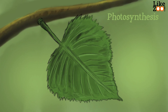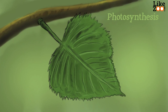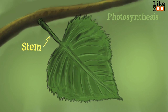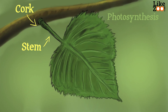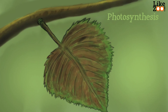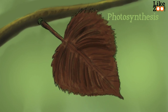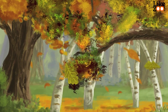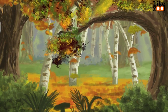When autumn begins, the sun shines less fierce and long. The tree trunks suck up all the nutrients that are stored in the leaves. Each leaf has a stem — a cork on the end of the stem functions as a stop. The leaf stops getting food and dries out. The green color of the leaf changes to yellow, orange, dark red or brown. When the wind starts blowing, the leaves fall from the trees. The trees hibernate and stop feeding to protect themselves against the cold winter.